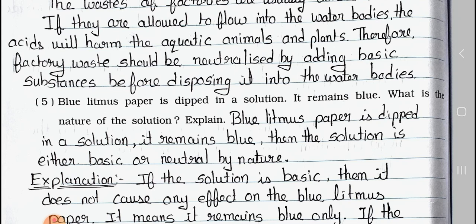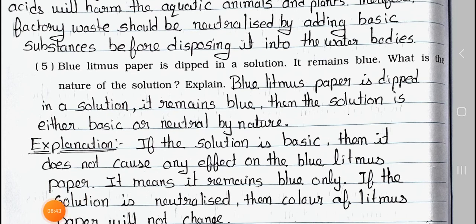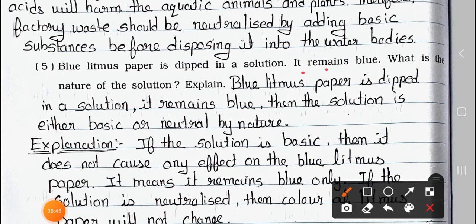Question number 5: Blue litmus paper is dipped in a solution. It remains blue. What is the nature of the solution? Explain. Answer: Blue litmus paper is dipped in a solution and it remains blue. Then the solution is either basic or neutral in nature.